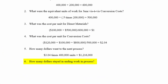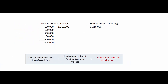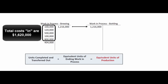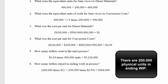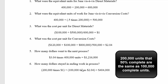The last question is how many dollars stayed in ending work in process. The simplest way is: if our total costs are $1,620,000 and we transferred out $1,216,000, the balance must be $404,000. Let's prove it: there are 200,000 physical units left, 100% complete for materials at $1.00 per unit equals $200,000. Those 200,000 units at 50% complete for conversion equals 100,000 complete units. At $2.04 per unit, that's $204,000. Combined: $404,000.